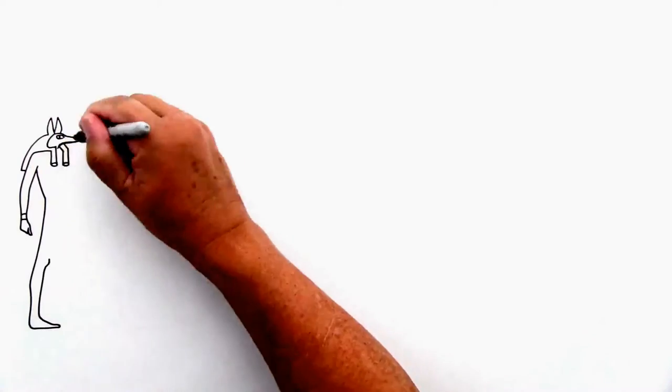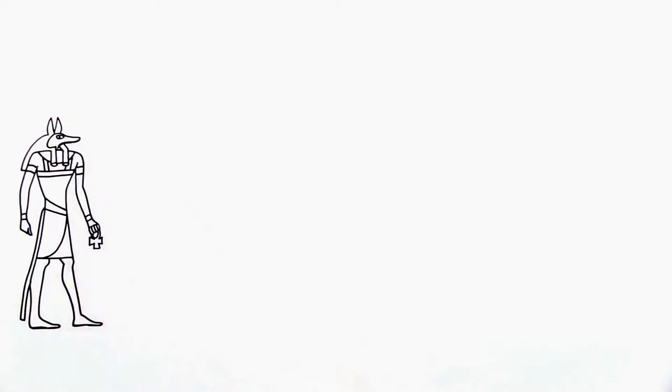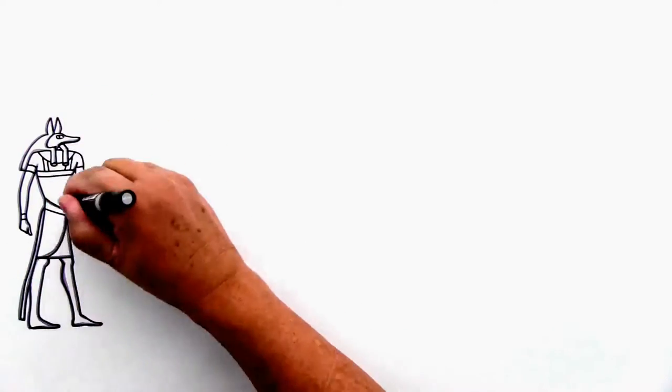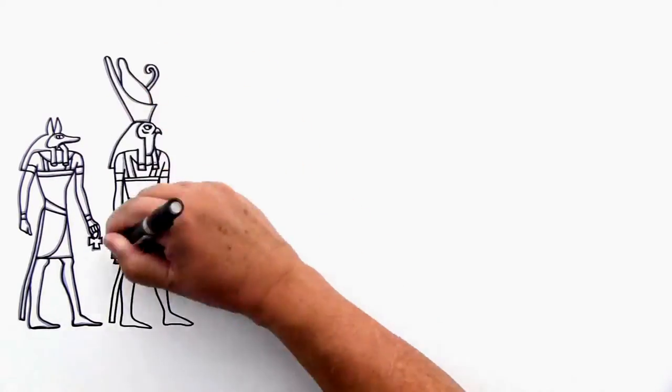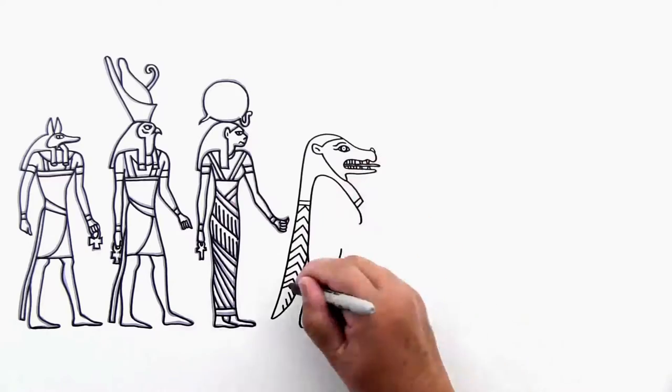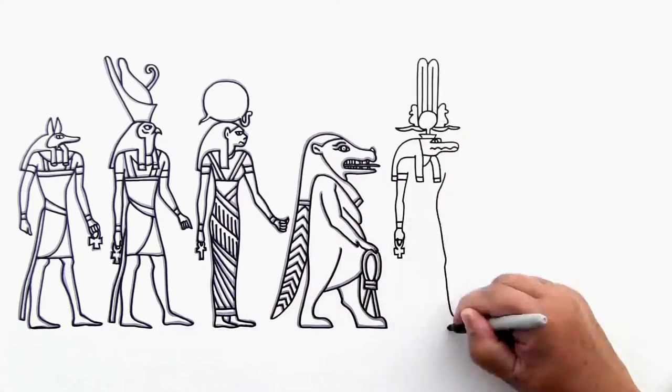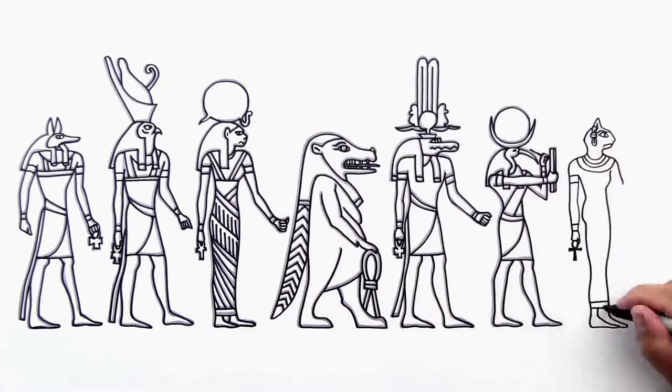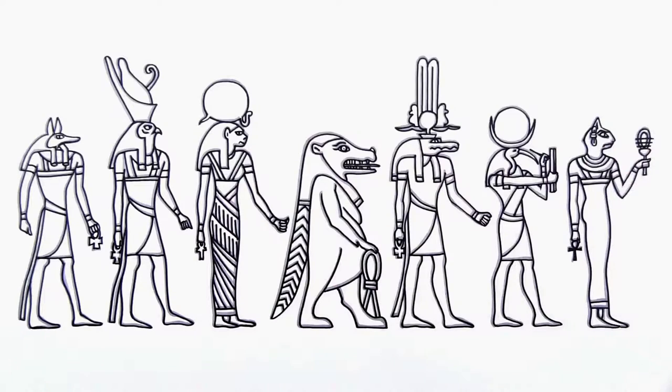That doesn't mean Egyptians weren't creative. Just look at their pantheon of gods. They imagined jackal-headed gods, and hawk-headed gods, lion-headed goddesses, hippo-headed goddesses, crocodile-headed gods, and ibis-headed gods, cat-headed gods, and, well, you get the picture.